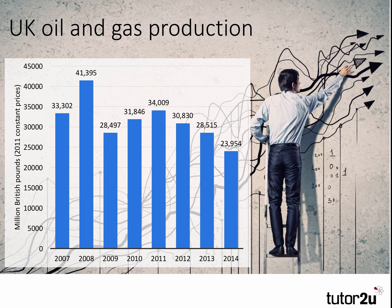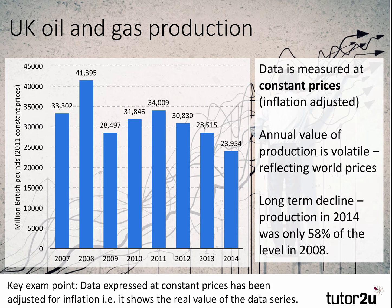This tells us that the data has been adjusted for inflation. Now you may be asked to apply or assess the significance of the data in this table. The data is measured at constant prices, which tells us that the information is inflation-adjusted — it's showing us the real level of oil and gas production.